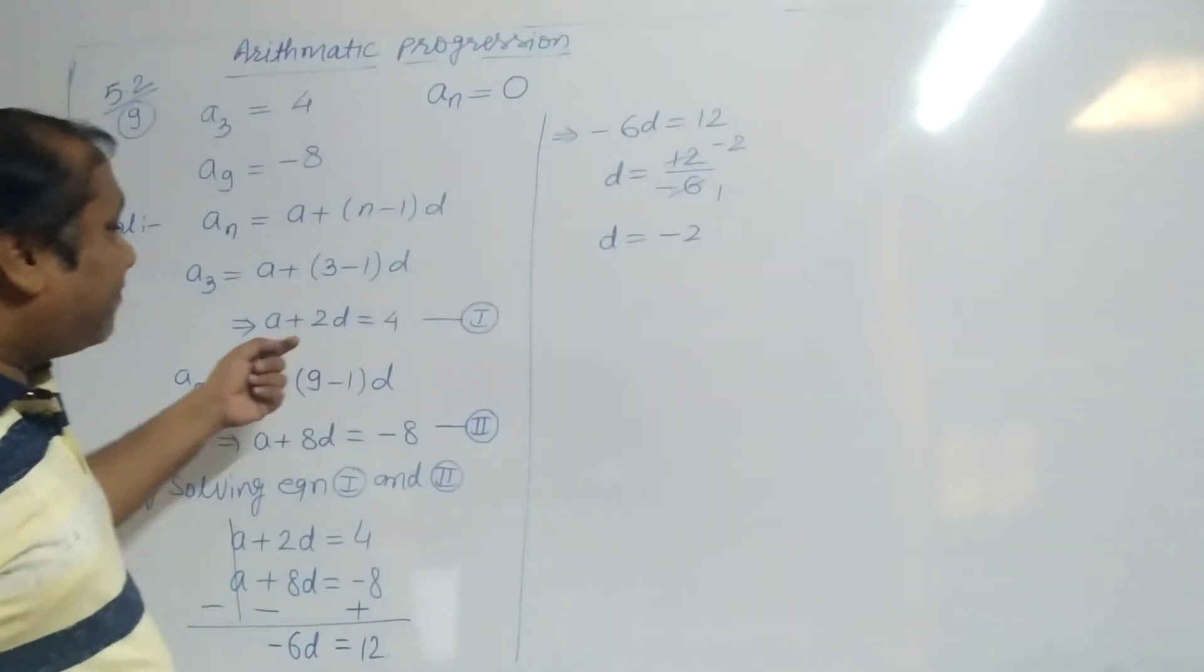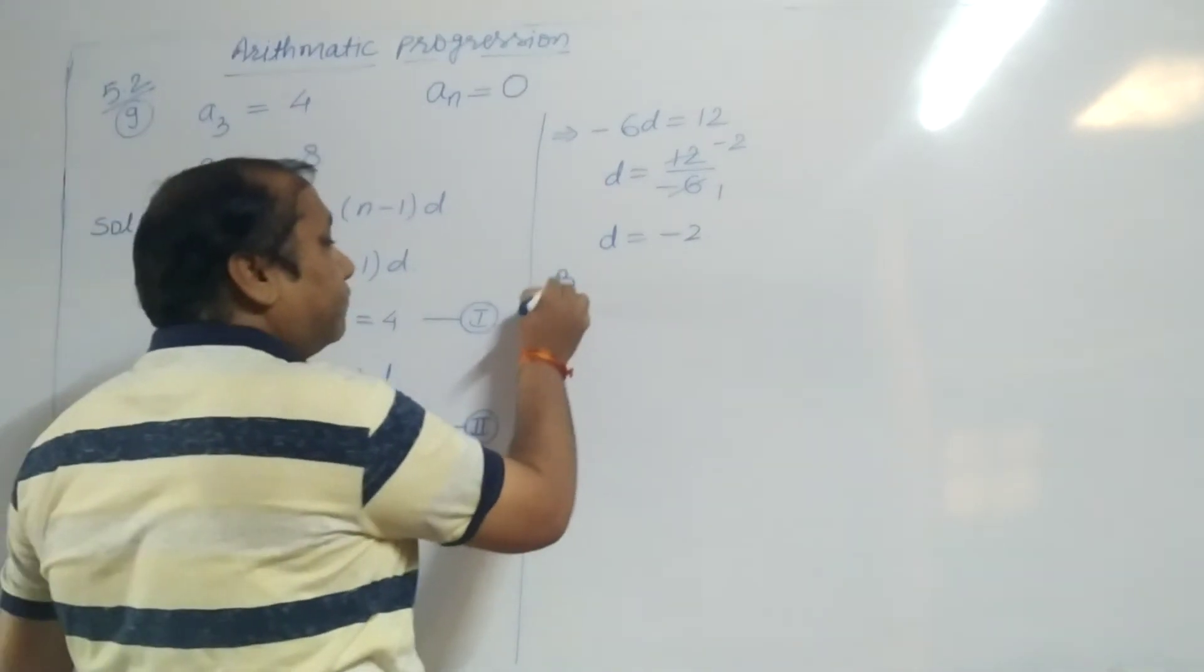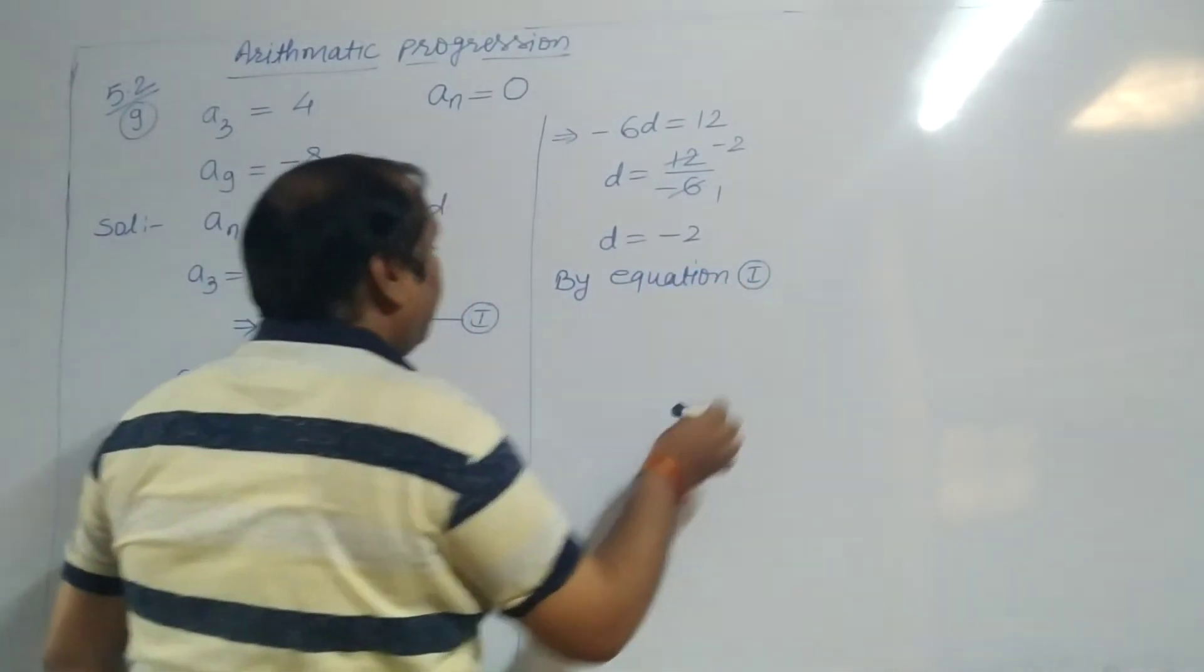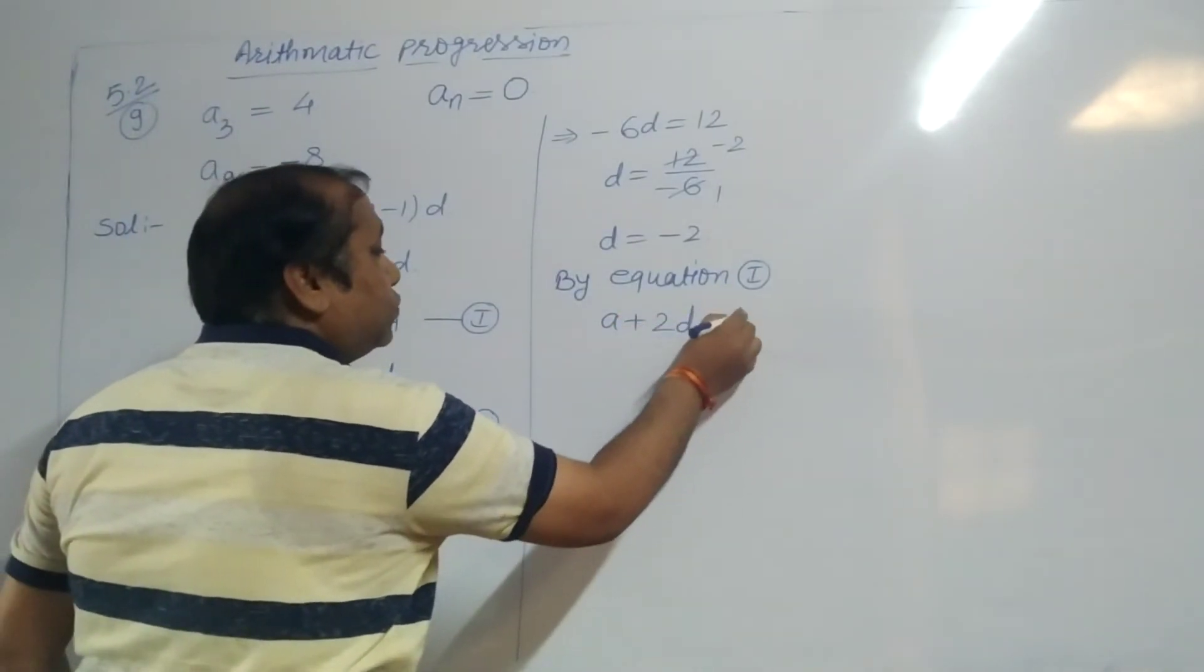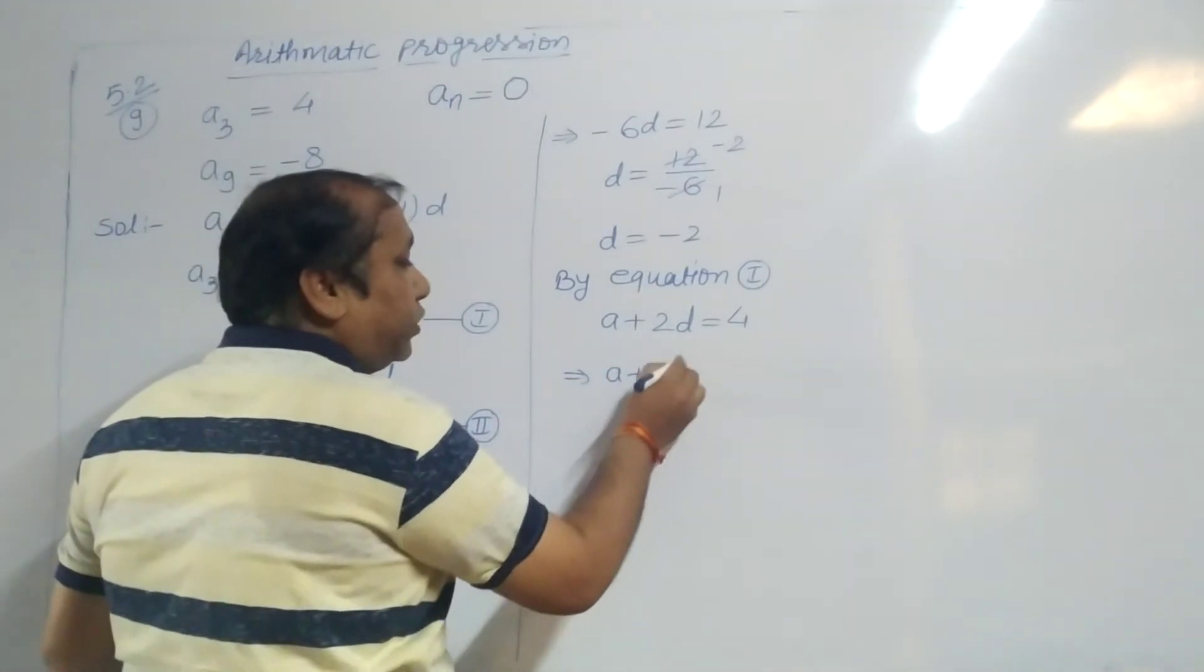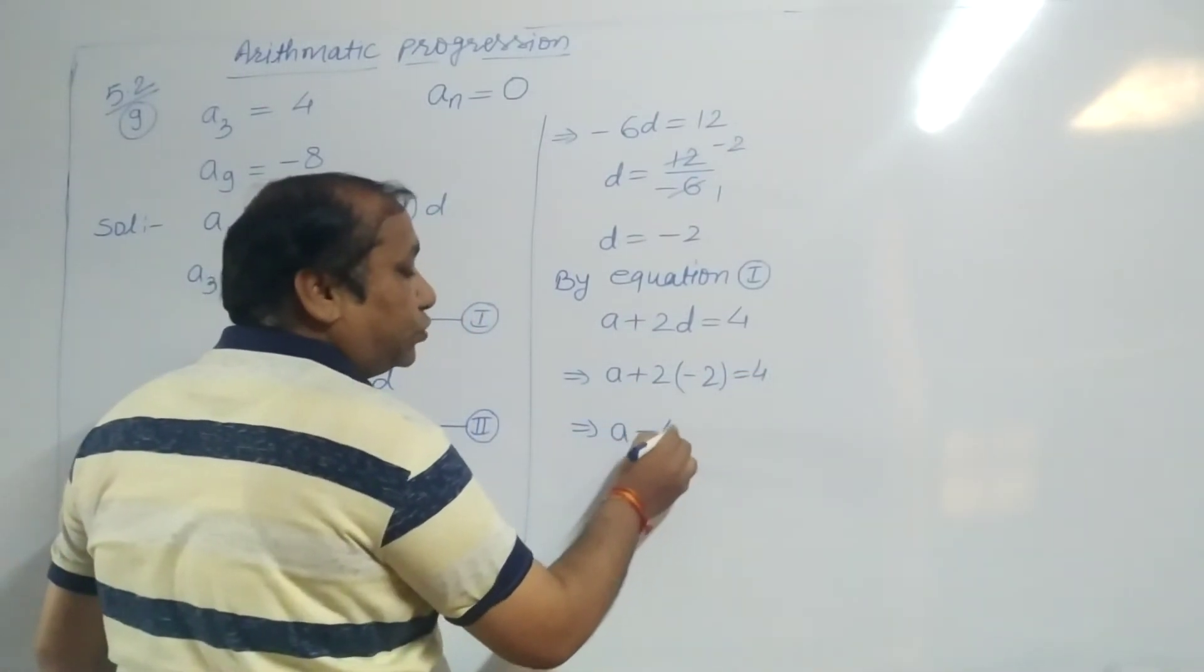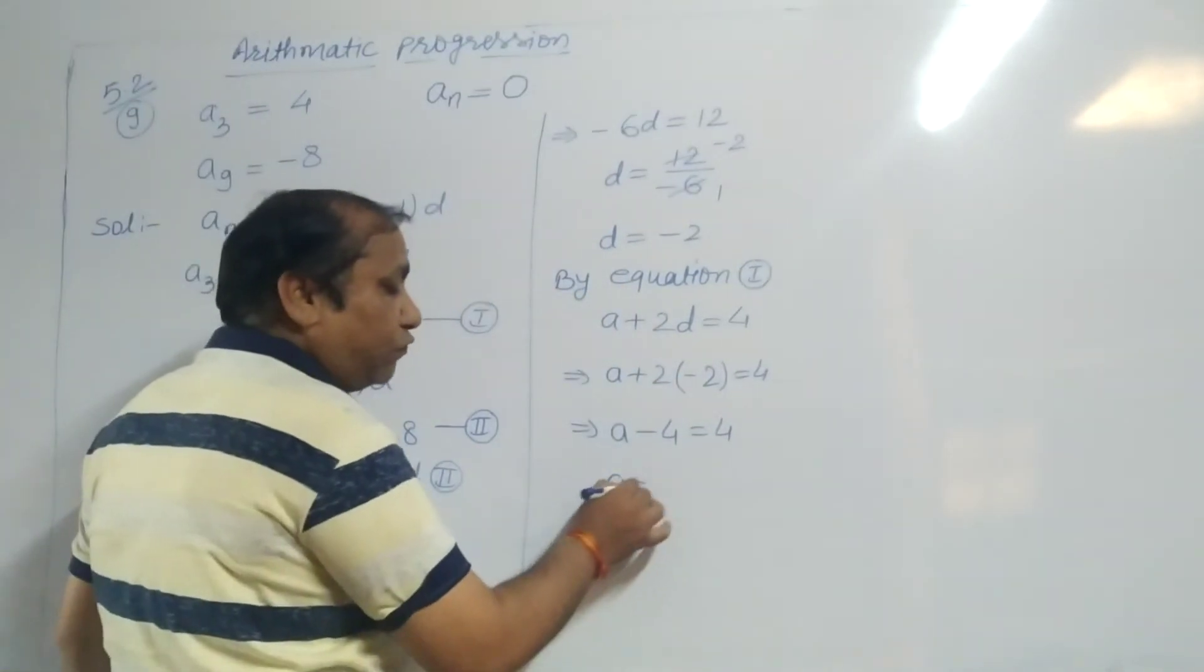Put the value of D in equation 1. By equation 1, what is equation 1? A plus 2D equals 4. A plus 2 into D's value minus 2 equals 4. A plus minus 4 equals 4. A equals 4.